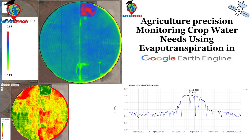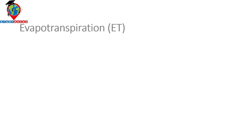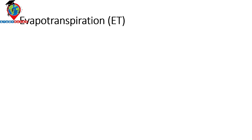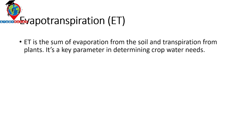I will explain everything step by step, so I hope you can easily learn all the details about monitoring crop water needs using evapotranspiration in Google Earth Engine. Evapotranspiration is the sum of evaporation from the soil and transpiration from plants — it is the key parameter in determining crop water needs.